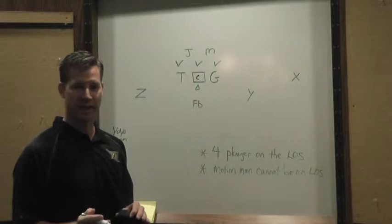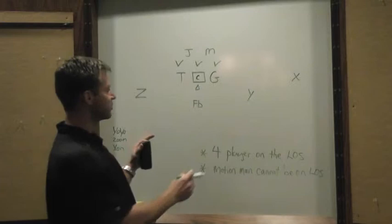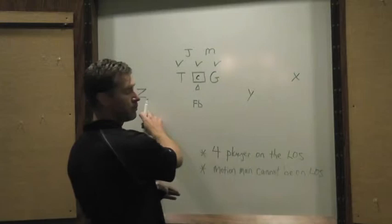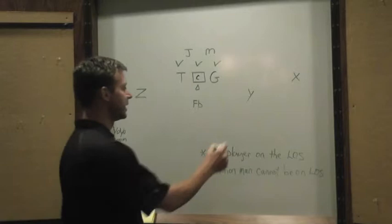Now, the motion man cannot be on the line of scrimmage. He has to start in the backfield. The first motion I'm going to look at right now is yo-yo motion. This is what I call a right formation. A right formation for us is a two-by-one receiver set.